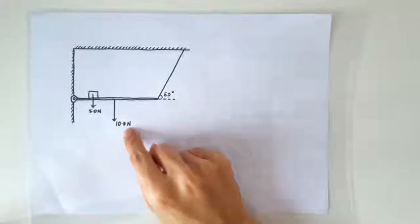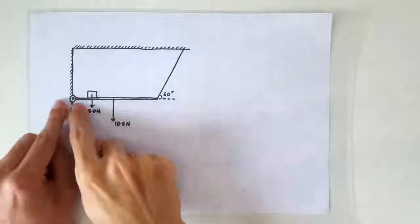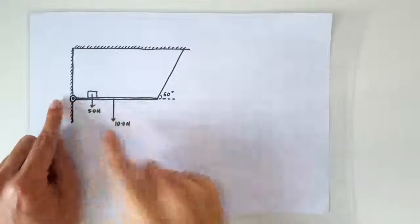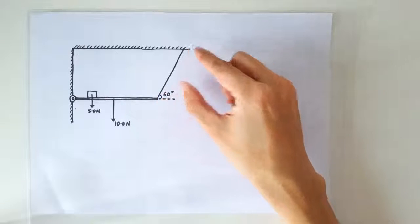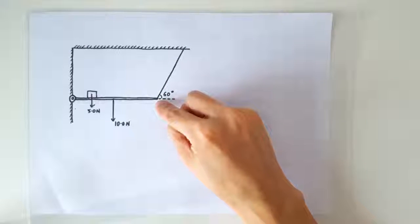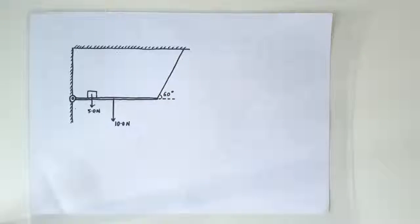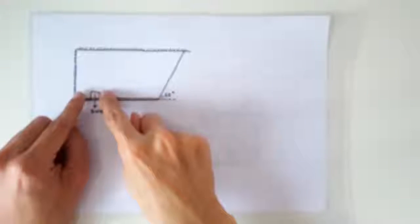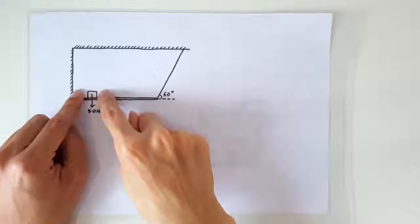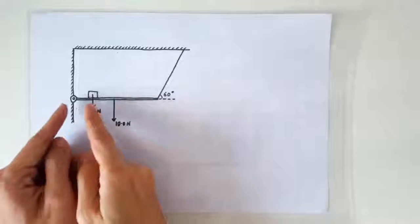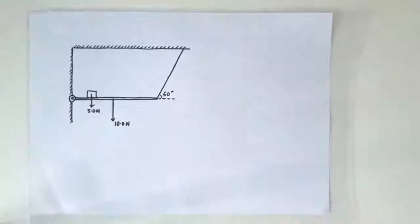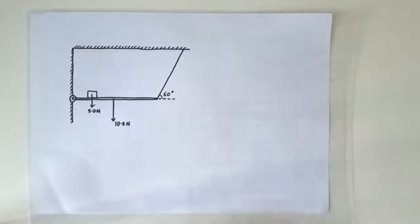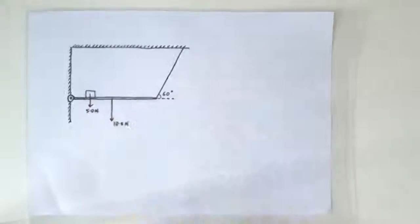We have a uniform beam of weight 10 newtons hinged to the wall. This beam is held horizontally by a rope which is tied to the right end of the beam and to the ceiling. Just for fun, we will have one more block here whose weight is 5 newtons and the block is placed at one quarter of the length of the beam. So we are going to solve for all the other forces acting on the beam.